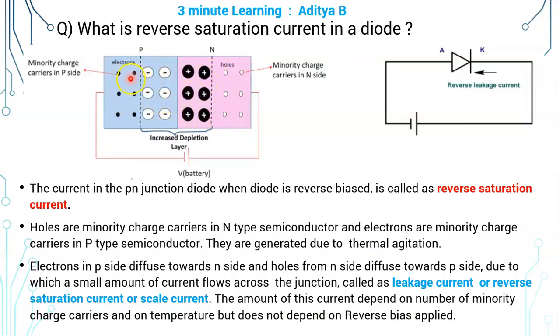Electrons in P side diffuse towards the N side and holes from N side diffuse towards the P side, due to which a small amount of current flows across the junction.